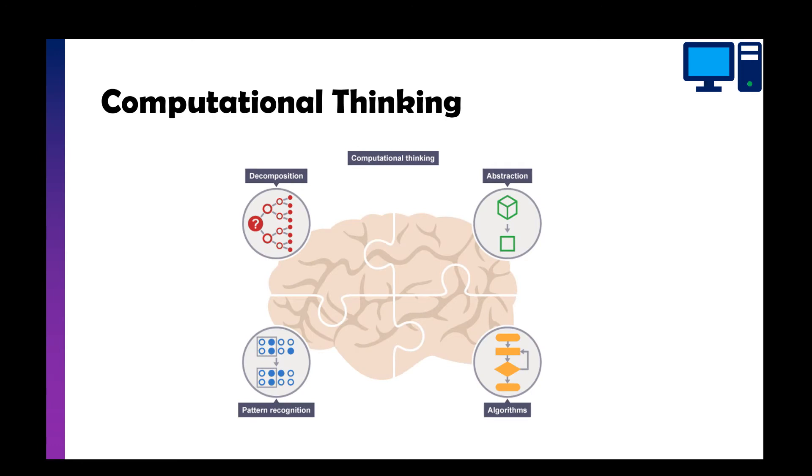So before we start, computational thinking encompasses four key topics. We've got decomposition, abstraction, pattern recognition, and algorithms. Each of these stages need to be tried and tested and used before we can say we have solved the problem. So we should be abstracting, decomposing, and recognizing patterns, and then create an algorithm. That should allow us to have solved the problem using computational thinking.